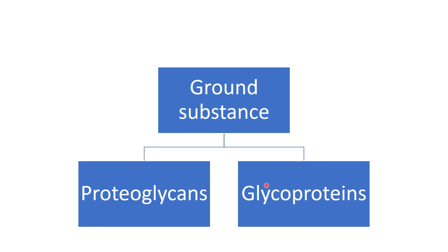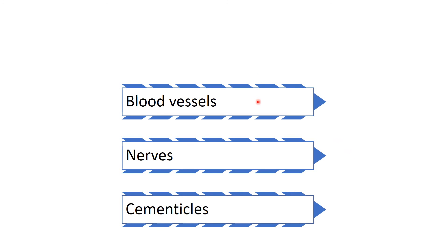Under ground substance, we have two categories: proteoglycans and glycoproteins. Next, we have other connective tissue elements like the blood vessels, nerves, and cementals. All these together constitute the histology of the periodontal ligament.